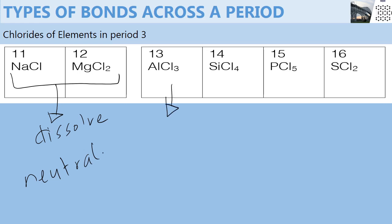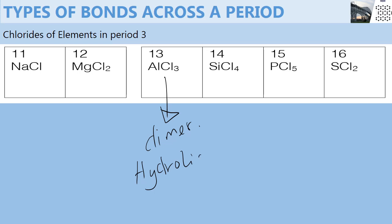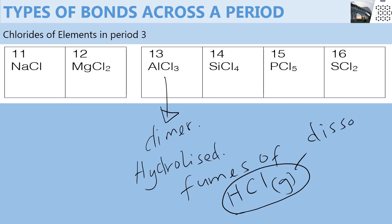As for aluminium chloride, since it formed a dimer, it also has peculiar characteristics. Instead of dissolving in water, it is hydrolyzed in water to form a complex and fumes of HCl gas. So in this case, the hydrogen chloride gas will dissolve in the remaining water to form hydrochloric acid. And therefore, the solution formed when aluminium chloride is hydrolyzed in water is acidic.